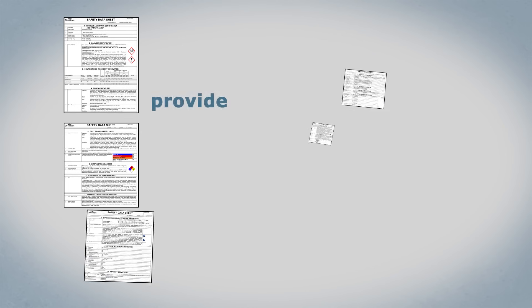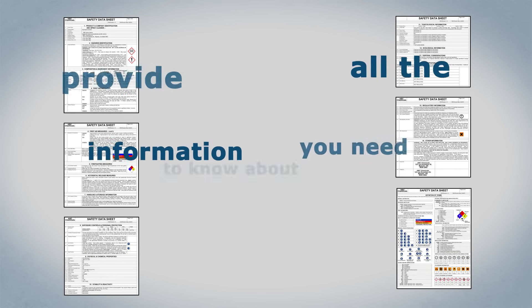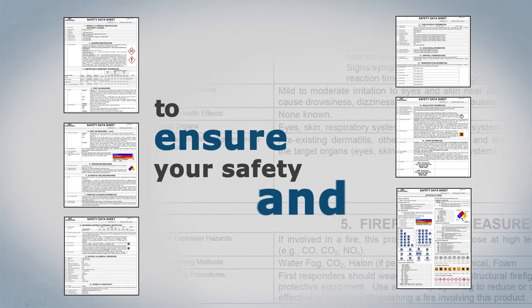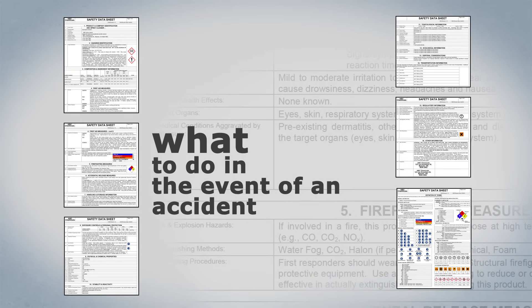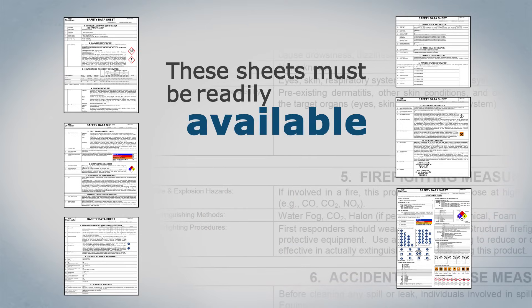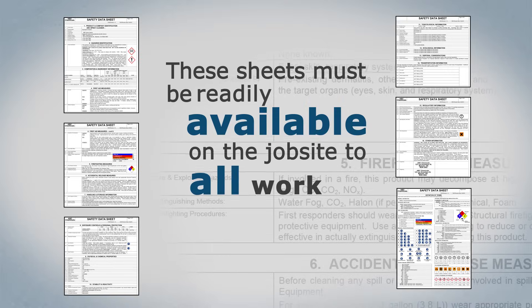These sheets provide all the information you need to know about the product to ensure your safety, and what to do in the event of an accident or emergency. These sheets must be readily available on the job site to all workers.